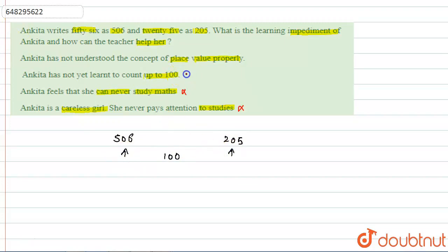So our answer is correct. Our answer is Option A: Ankita has not understood the concept of place value properly. Let's see how we can say this. Why can we say this point is right?